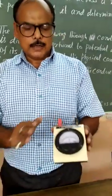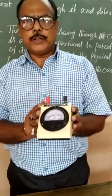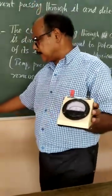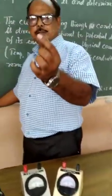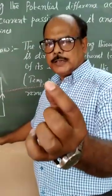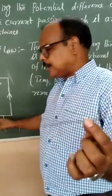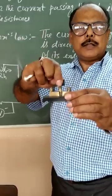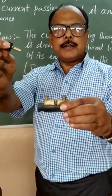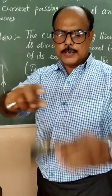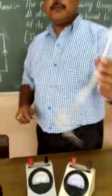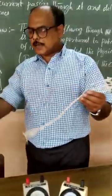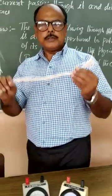This measures current and this measures the potential difference. And this is the unknown resistor, a heater coil. This is the switch. This is the connecting wire.